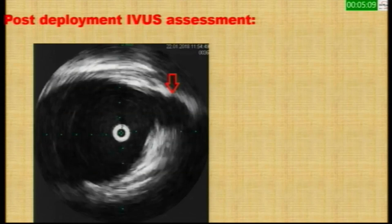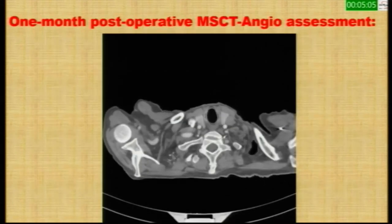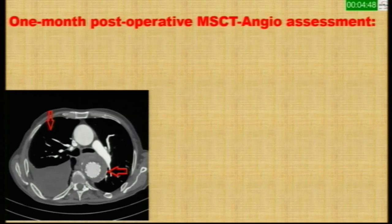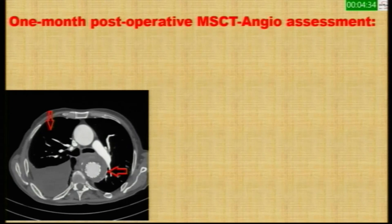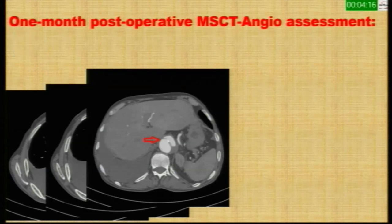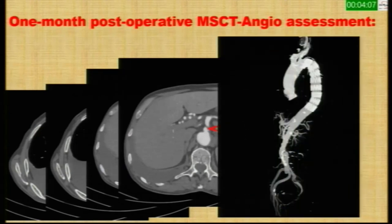IVUS detail confirmed left subclavian patency and graft was open. At one-month post-operative multi-slice CT angiography, there was expansion of the right lung with significant decrease in the right hemothorax. Our cardiothoracic team decided to evacuate the residual hemothorax using uniport VATS evacuation rather than an intercostal tube. The one-month CT showed the graft nicely open, false lumen totally thrombosed, no endoleak. IVUS also confirmed just one proximal entry and one distal entry point — we covered the proximal entry and left the distal, with SMA originating normally.